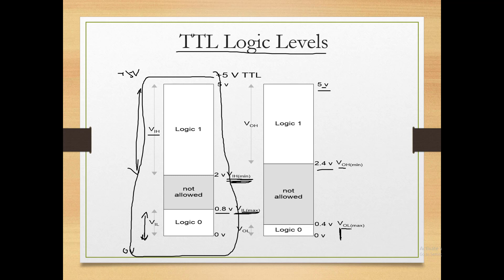Above 0.4V, you cannot determine whether the IC is in logic high or logic low state. The range in between is 'not allowed' — we try to ensure voltage never falls in this range, because in this range the IC will be neither ON nor OFF. So for TTL, noise margin for logic high is from 2.4 to 5 volts — the IC can handle noise up to this margin.